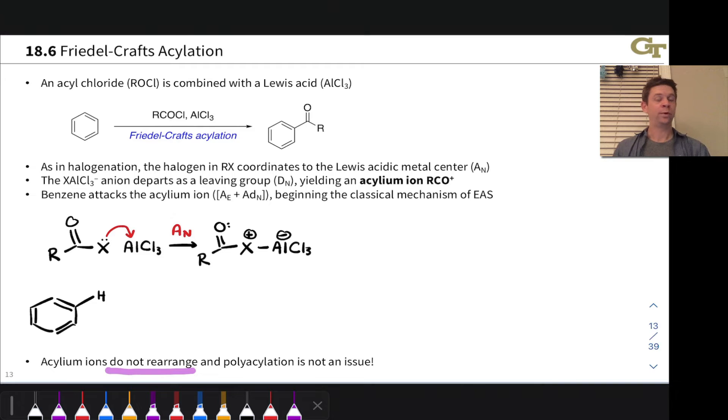At this point, we've seen that this leaving group can depart to produce a cation in the next step. And that's exactly what happens here with a bit of an extra push because there's a lone pair that's well positioned to promote beta elimination of the leaving group in this case.